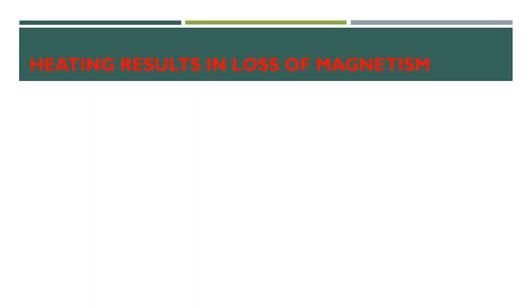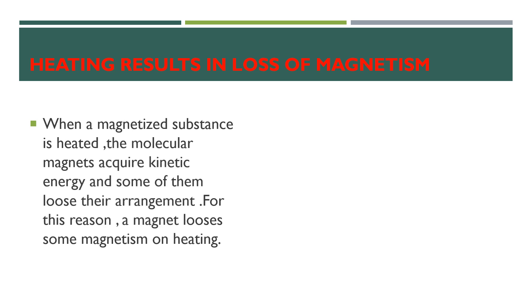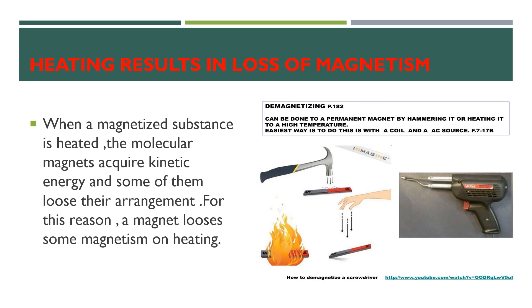Heat is a factor which can affect the strength of the magnetism of a substance. When a magnetized substance is heated, the molecular magnets gain kinetic energy and because of their motion they may lose their alignment with each other. As a result, a magnet loses some magnetism when heated.